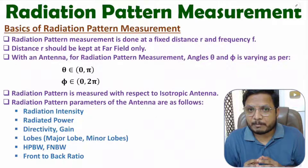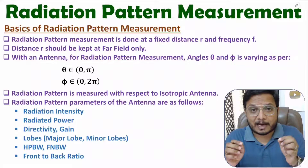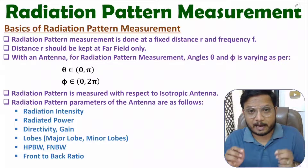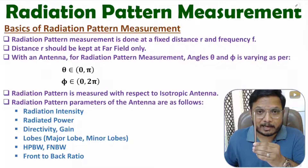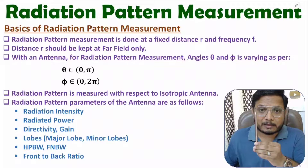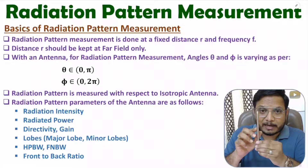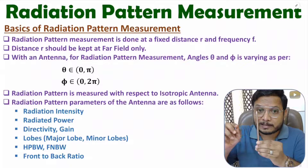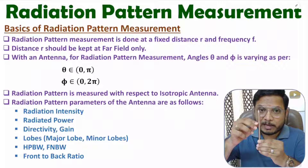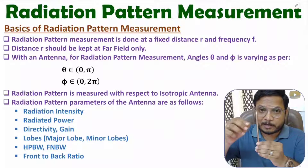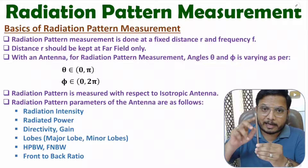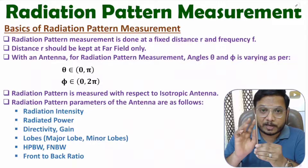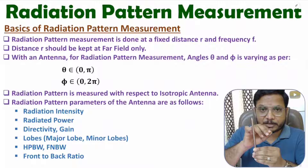Measurement of radiation pattern is done at a fixed distance r and at a fixed frequency f. For a given antenna, measurement is done at constant distance r with respect to that antenna. The transmission frequency of the antenna will be fixed and constant throughout the entire measurement of the radiation pattern.